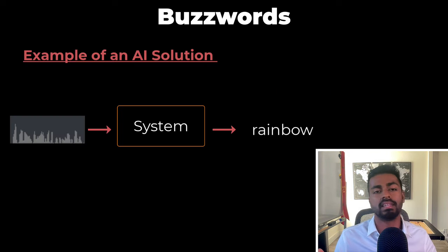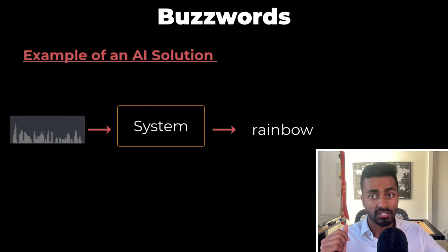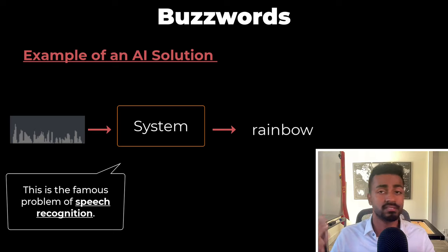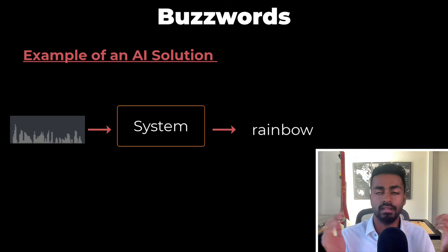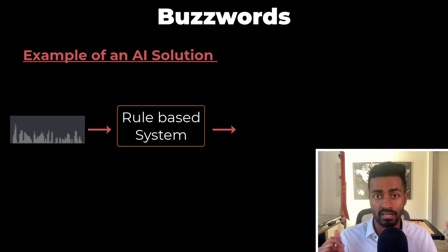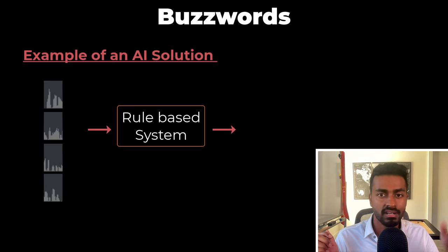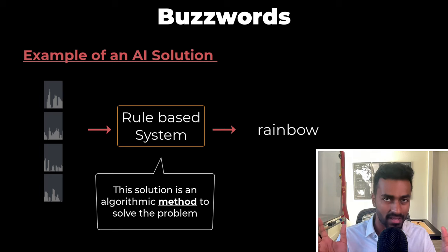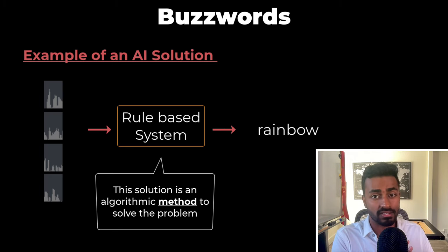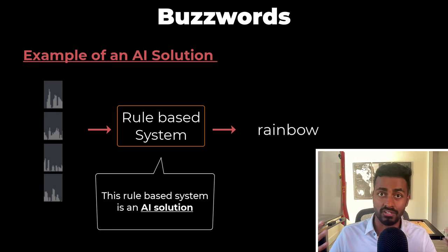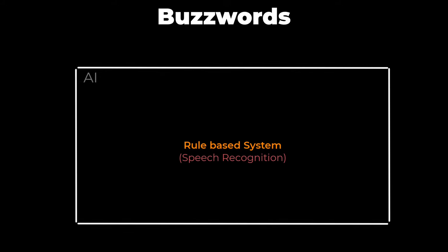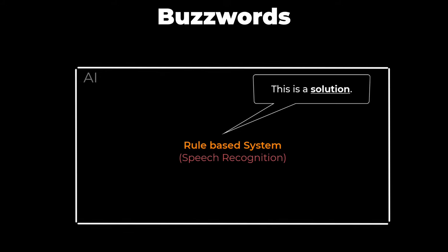What's an example of an AI solution? Let's say that we want to build a system that takes in a speech wave and determines what word you say. This is a famous problem of speech recognition. One solution is to solve this problem using some rule-based system — we break the sound wave into chunks, map them to phonemes, and recognize the word spoken. This solution is an algorithmic method to solve the problem, and hence by definition of an AI solution, this rule-based system is an artificial intelligence solution. Let's represent the field of artificial intelligence with this large rectangle, and within this field we're going to write down individual solutions — in this case, a rule-based AI system.